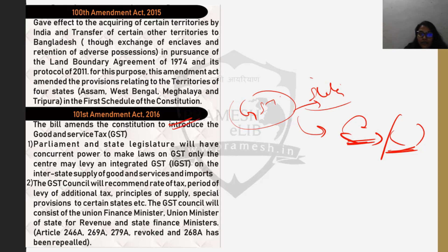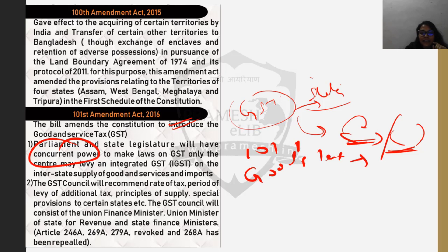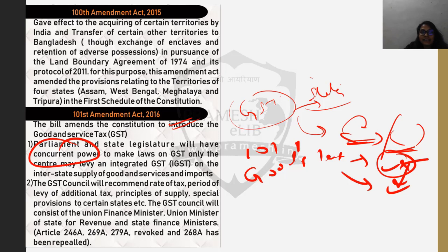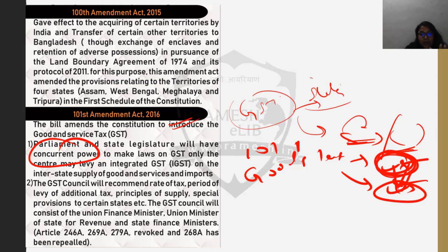The 101st Amendment Act 2016 states that Parliament and state legislatures will have concurrent power over GST. Earlier, goods taxes had both center and state working over different components — some taxes were levied and collected by center, some levied by center but distributed between both, some collected by states and kept by states. Service tax, however, was levied by center only.